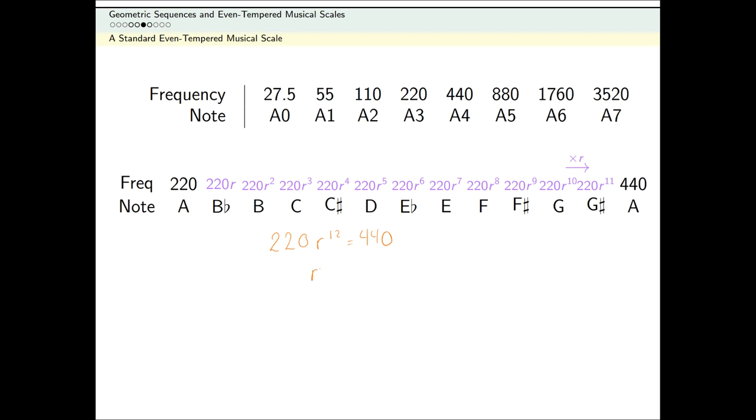If I divide both sides of this equation by 220, I see that R to the 12th should be 2. So that tells me R needs to be the 12th root of 2, or 2 to the 1 over 12.